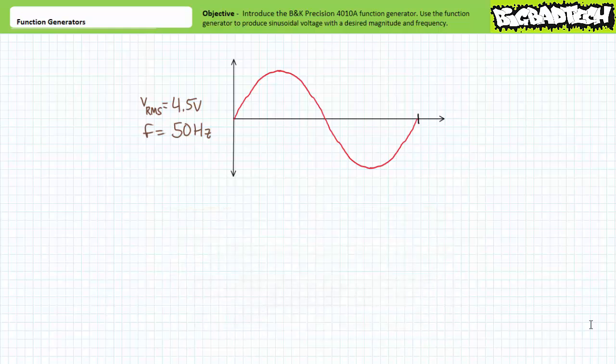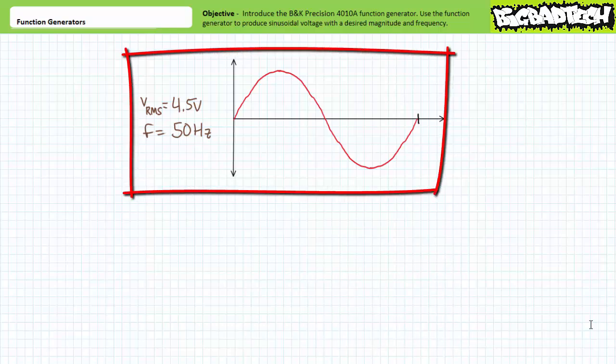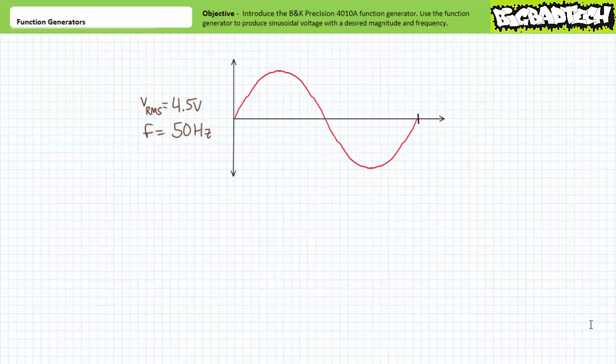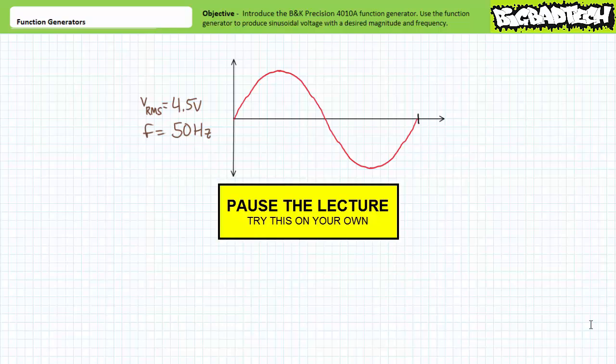Let's use the BK Precision 410A function generator to set up a voltage signal with the following characteristics. The waveform is to be sinusoidal in nature and have an effective or RMS value of 4.5 volts and a frequency of 50 hertz. Given these characteristics, it should be well within your capacity to determine the peak voltage, the peak-to-peak voltage, and the resultant period. By all means, do so now.